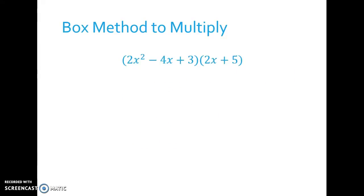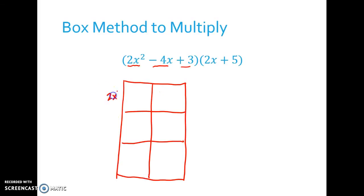When you use the box method to multiply polynomials you're not restricted to just a binomial times a binomial. This polynomial has 3 terms: 2x squared, negative 4x, and positive 3. Which means that when I do the box method to multiply these polynomials together I'm going to have a 3 by 2 box. So my height will be 2x squared minus 4x plus 3. My width will be 2x plus 5.